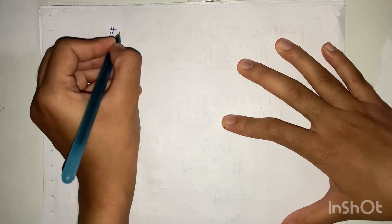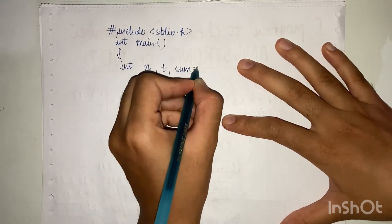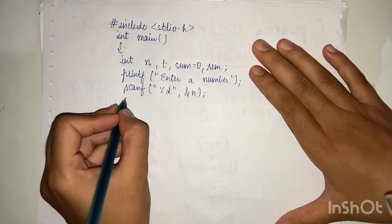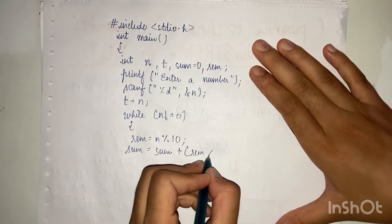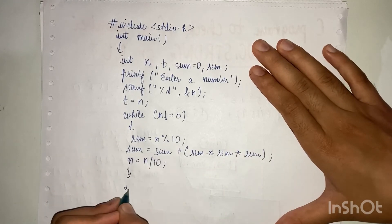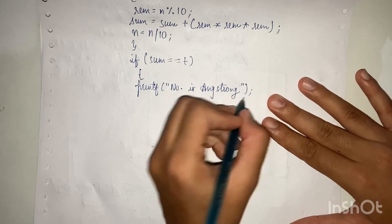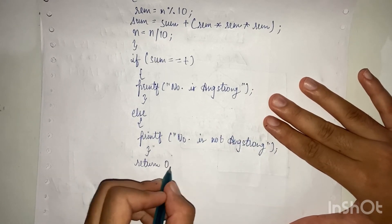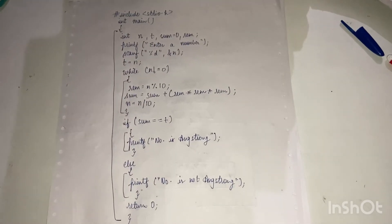That's how the logic is applied. I hope you understood the logic. Let's quickly write the code. Here is the code for the Armstrong number. I hope you understood how we did this.